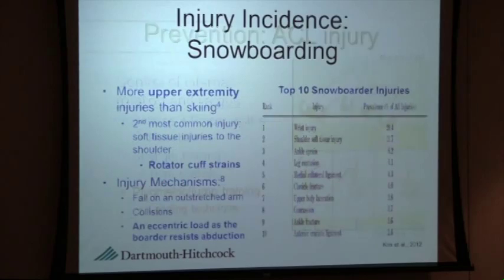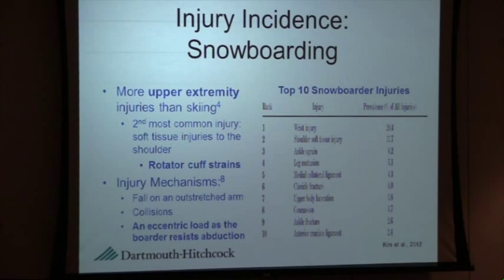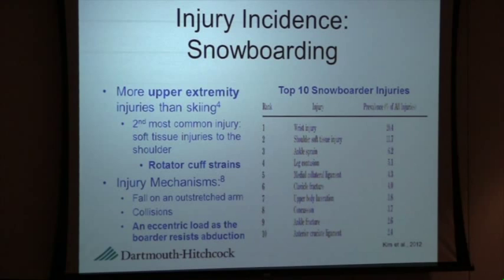Switching to snowboarding — when we study the incidence of injuries in snowboarders, we see a significantly larger amount of upper extremity injuries compared to recreational skiers. In competitive, professional snowboarders, we actually see more knee injuries and fewer wrist injuries because they fall less. The second most common injury to a snowboarder is a shoulder injury — a soft tissue shoulder injury — with rotator cuff strains being the most common.